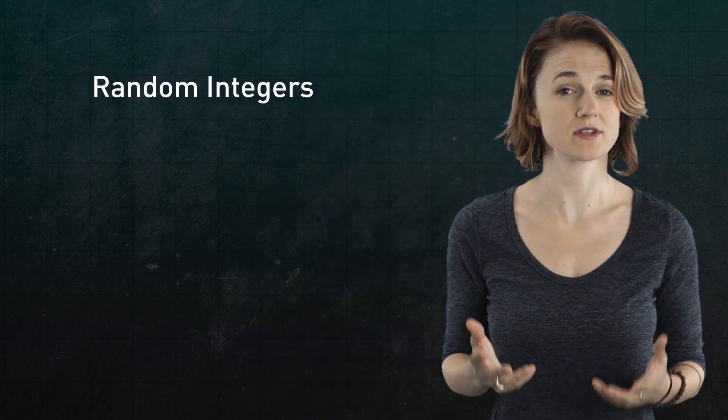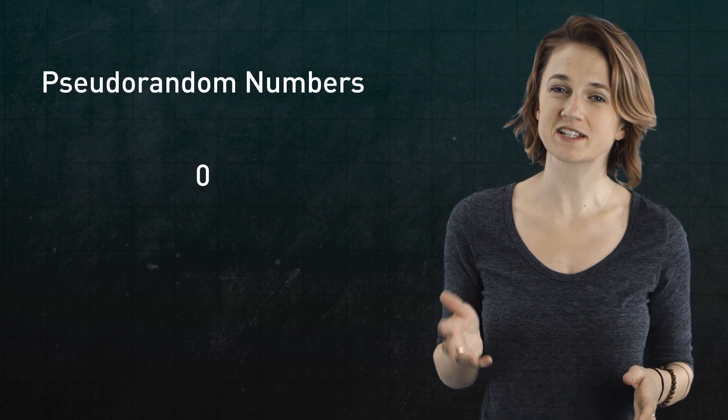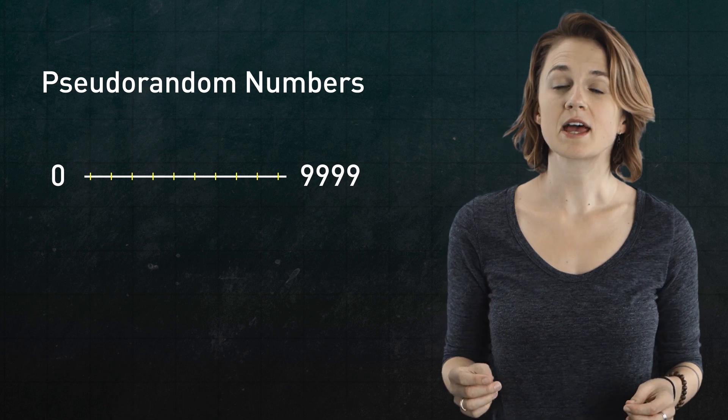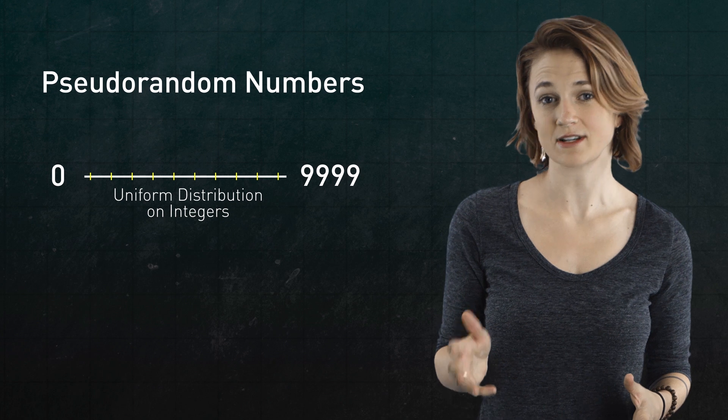And finally, I want to mention the distribution of these sequences. So far, we've looked at methods which produce random integers, or simulate it with pseudorandom integers, between 0 and some fixed value, like 9,999. In other words, the distribution is uniform on the integers between 0 and 9,999.